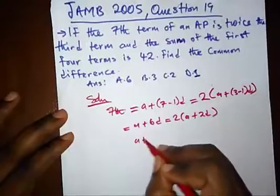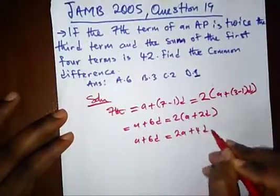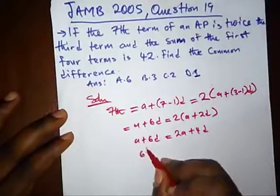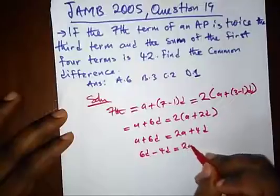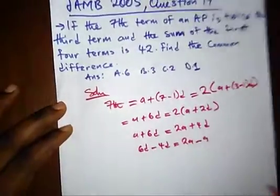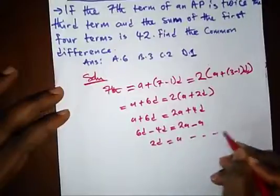So from here, we have A plus 6D is equal to 2A plus 4D. So resolving this, we have 6D minus 4D equal to 2A minus A. So here, we have 2D is equal to A. This is equation 1.